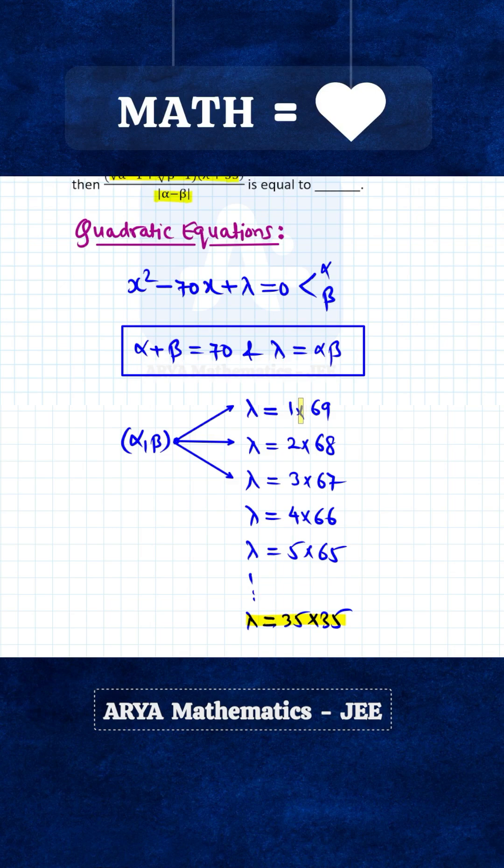If we take one of the roots as 1 and another root 69, then we will get the minimum value of lambda. The second minimum value will be 2 into 68, and so on, and in this direction the value of lambda will keep increasing. The smallest value of lambda would be 1 into 69, but we have to ensure that lambda is neither a multiple of 2 nor a multiple of 3. 69 is a multiple of 3, so we cannot take this first case.